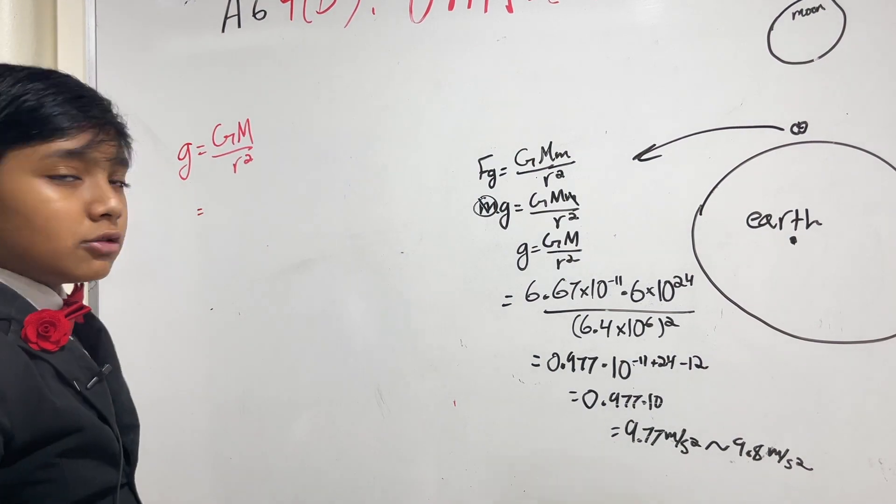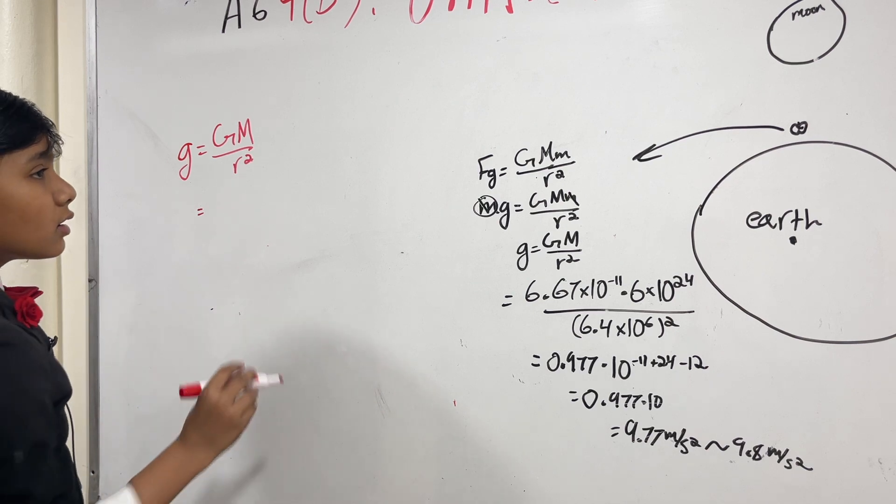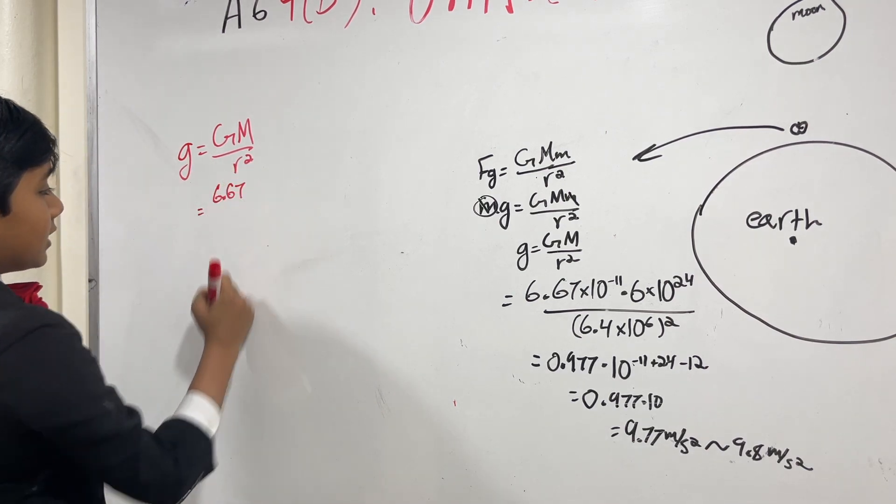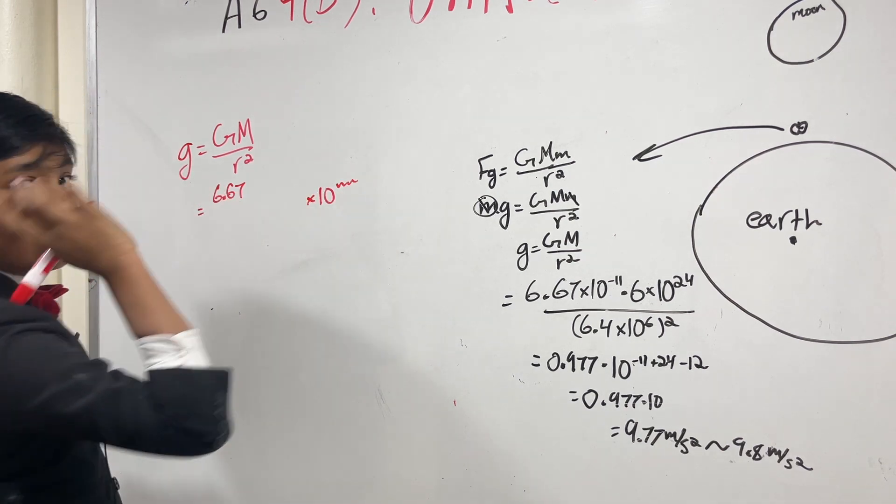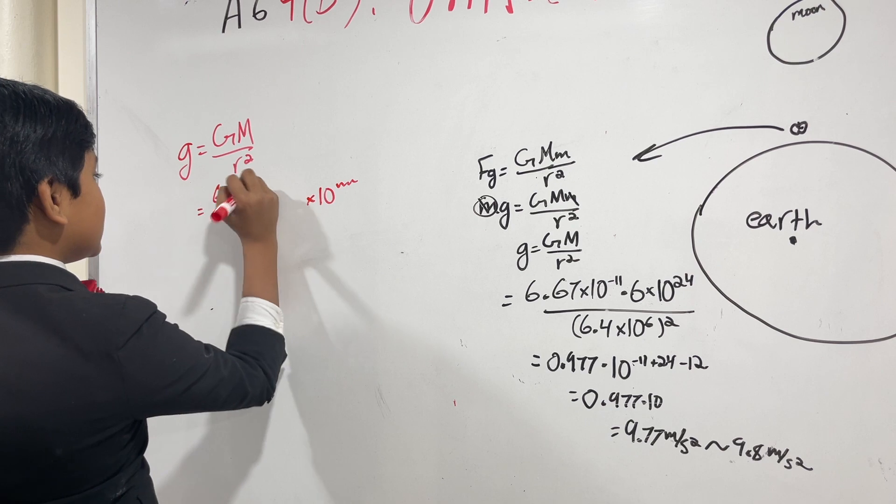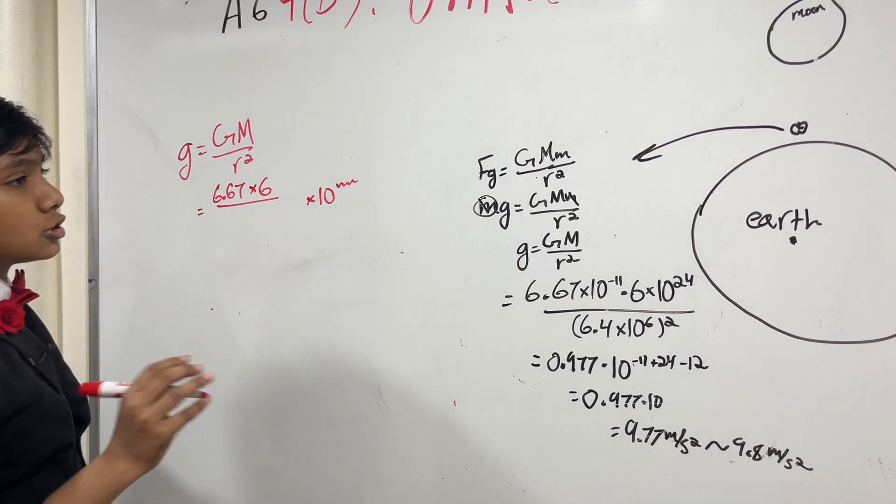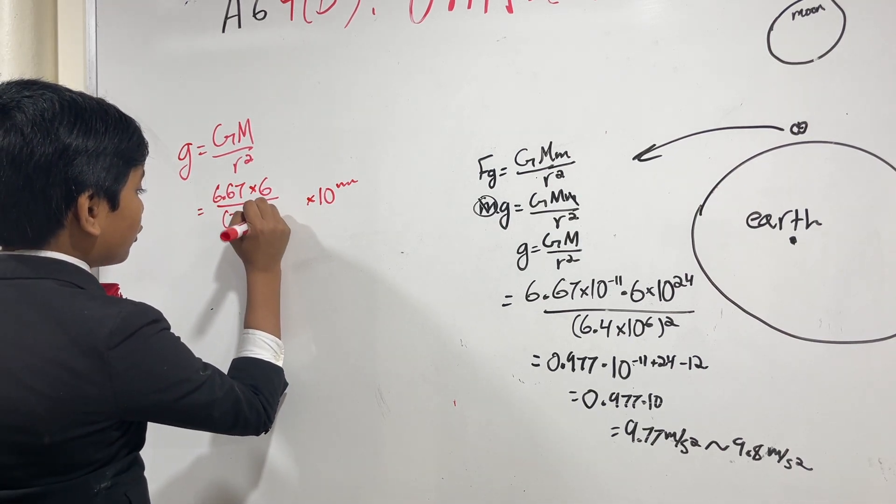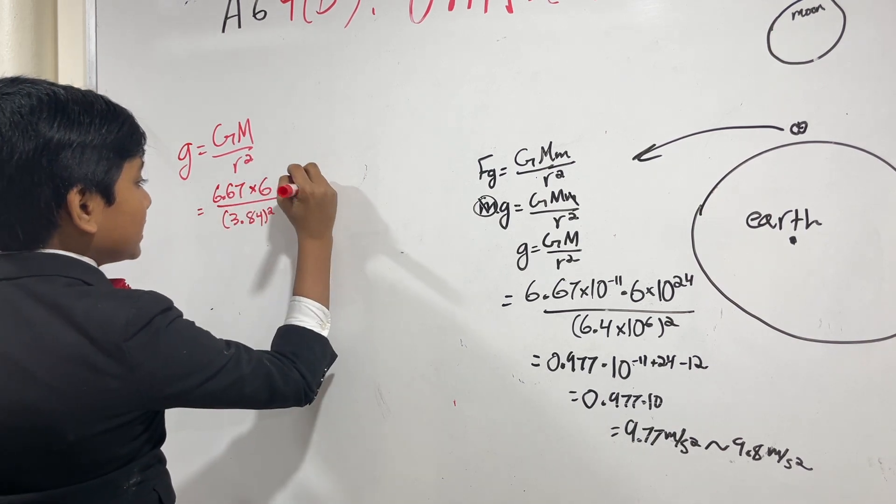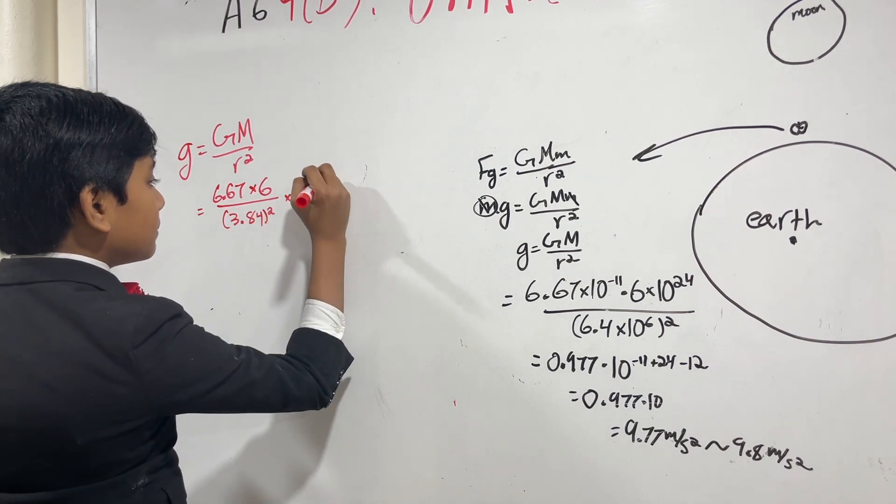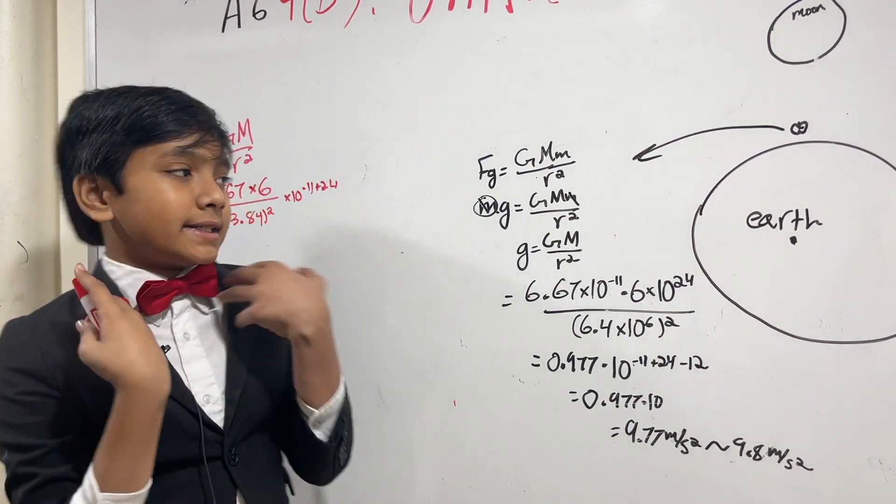Alright, so now, we have g and Gm over r squared, so we have 6.67, and we'll leave the times 10 to the something at the end over here. So, we have 6.67 times 6, from the 6 times 10 to the 24th, over r squared, 3.84 squared, times 10 to the, this would have been minus 11, this would have been plus 24, and this would have been 10 to the 8th squared, 10 to the 16th.